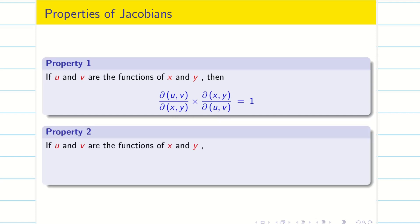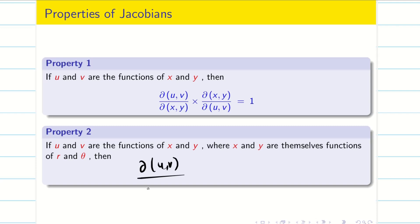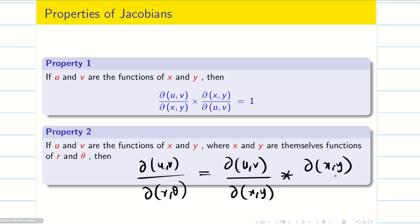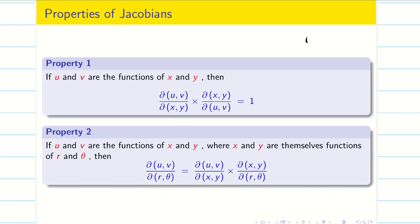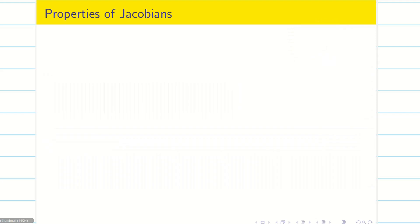Second property: if u and v are functions of x and y, and x and y are themselves functions of r and θ, then ∂(u,v)/∂(r,θ) = ∂(u,v)/∂(x,y) × ∂(x,y)/∂(r,θ). So the Jacobian of (u,v) with respect to (r,θ) equals the product of the Jacobian of (u,v) w.r.t. (x,y) and the Jacobian of (x,y) w.r.t. (r,θ).